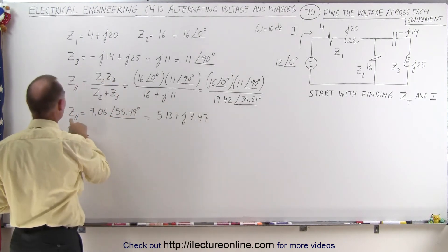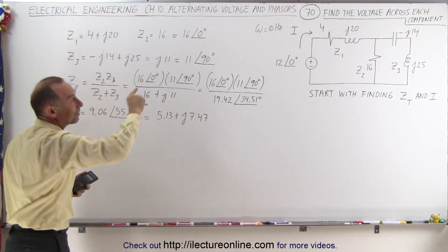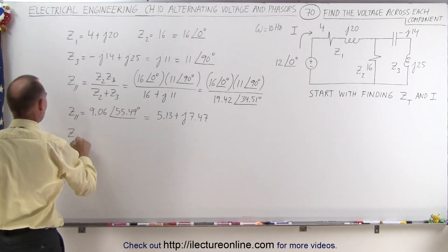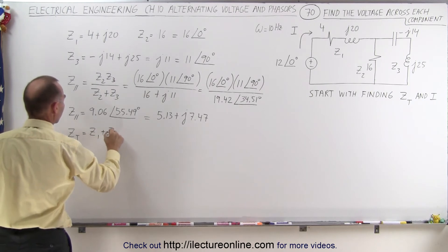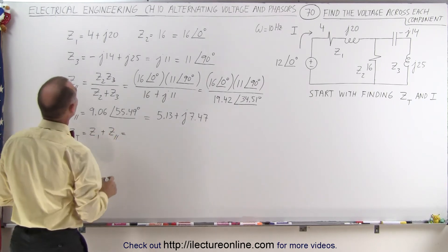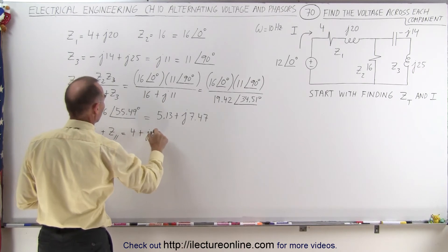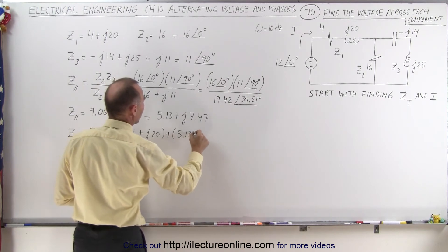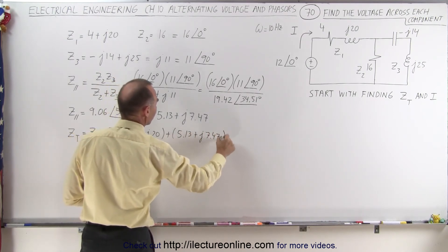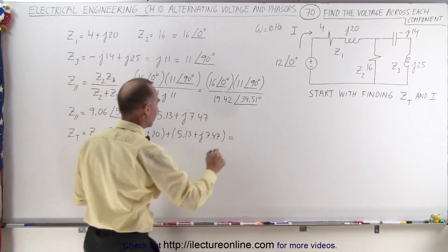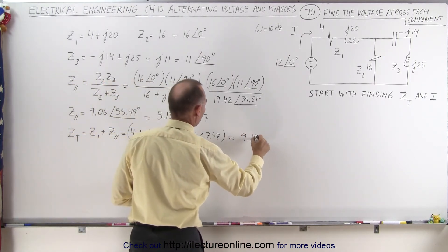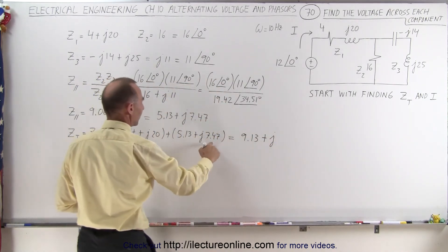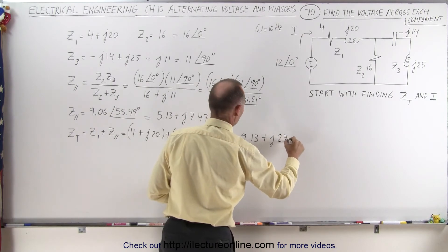Now we have the parallel branch impedance and Z1, so we can find the total impedance. Z total equals Z1 plus the parallel branch impedance: (4 + j20) plus (5.13 + j7.47). Adding the real parts gives 9.13, and adding the imaginary parts gives j27.47. So the total impedance is 9.13 + j27.47.